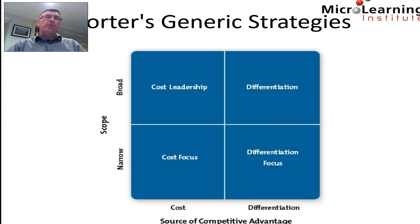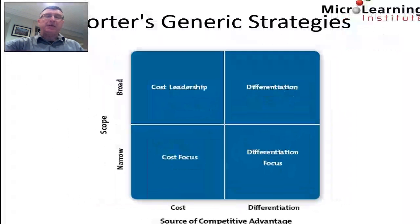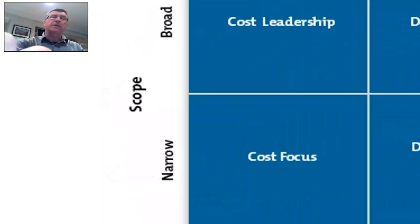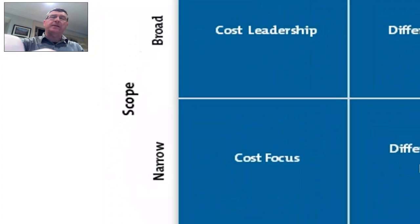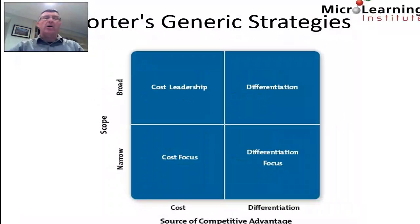Visually, Porter's three generic strategies model is often presented like this. On the x-axis, we have the basic sources of competitive advantage — in this case, cost or differentiation. Whereas on the y-axis, we focus on the scope of the marketplace: are we offering our products and services to a narrow market, or are they available to the entire marketplace?